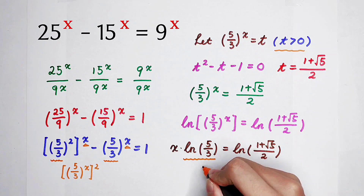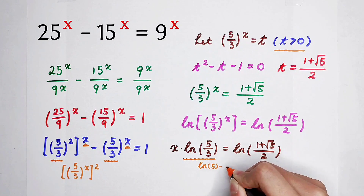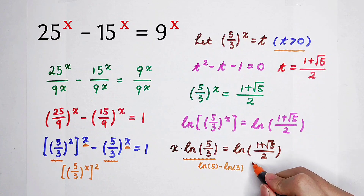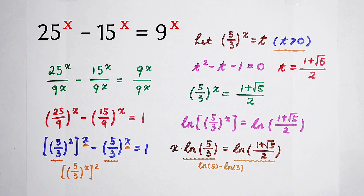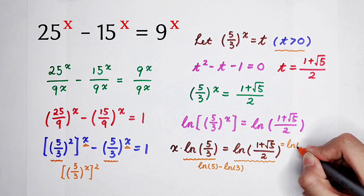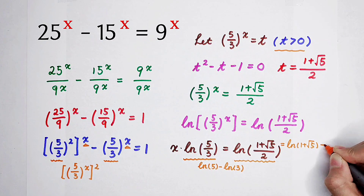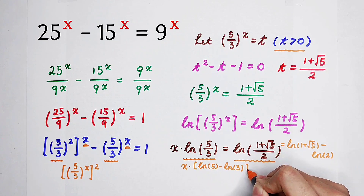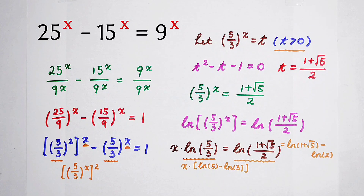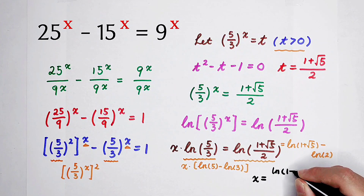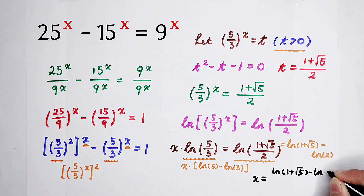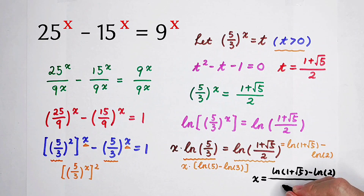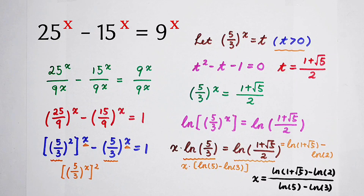Because the natural log of 5 over 3 can be written as the natural log of 5 minus the natural log of 3, and the right-hand side can be written as the natural log of 1 plus square root of 5, minus the natural log of 2. So the value of x becomes: the natural log of 1 plus square root of 5, minus the natural log of 2, over the natural log of 5 minus the natural log of 3. Subscribe to my channel for more videos — see you next time, bye-bye!